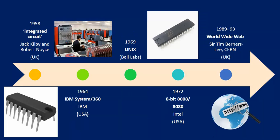Next, in 1958, integrated circuits were invented by Jack Kilby and Robert Noyce. In 1964, IBM introduced its first IBM System 360 in the USA. In 1969, Unix was introduced by Bell Labs. In 1972, an 8-bit microprocessor was introduced by Intel, known as the 8008 or 8080 — one of the first microprocessors. Next, from 1989 to 1993, the World Wide Web started becoming popular, introduced by CERN. Once the World Wide Web became popular, that was the biggest boost for computer technology.